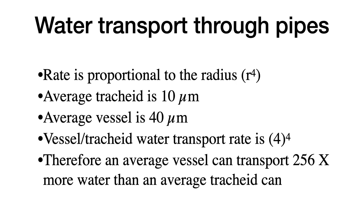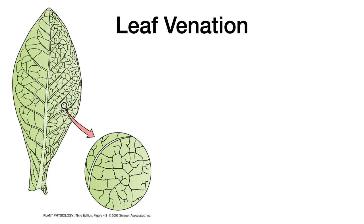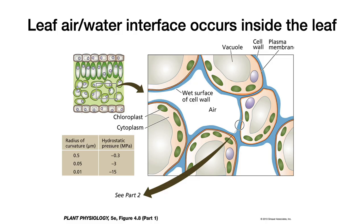Once water enters the leaf through the stem, it is distributed by a network of veins or venation. In dicots — the type shown here — major veins branch into progressively finer networks, eventually reaching a fine netted venation that brings vein endings close to almost every single cell in the leaf.